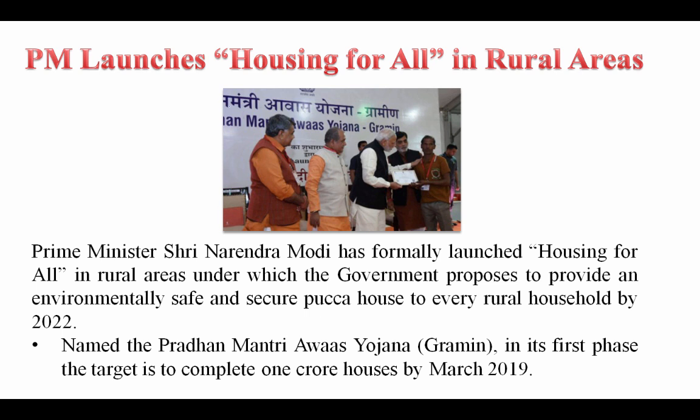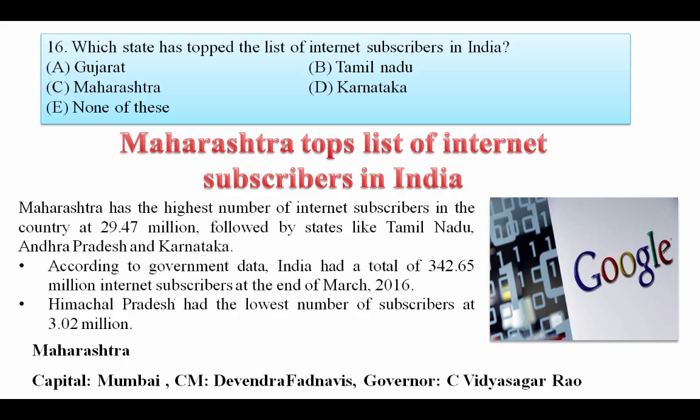PM Modi has formally launched 'Housing for All' in rural areas, under which the government proposes to provide an environmentally safe and secure pucca house to every rural household by 2022, named Pradhan Mantri Awas Yojana Gramin. In its first phase, the target is to complete 1 crore houses by March 2019.